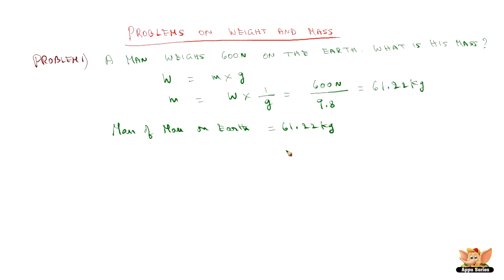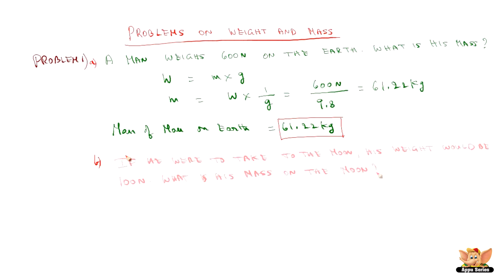So the mass of the man on the earth who weighs 600 Newton is 61.22 kg. Now let us go to the second part of the question: if he were taken to the moon his weight would be 100 Newton. What is his mass on the moon?